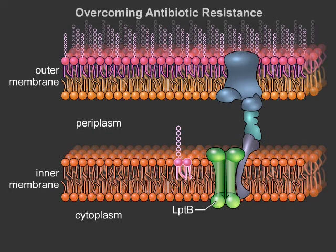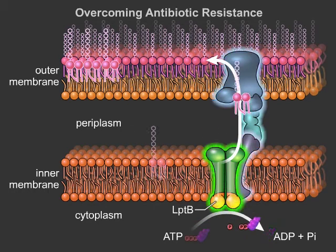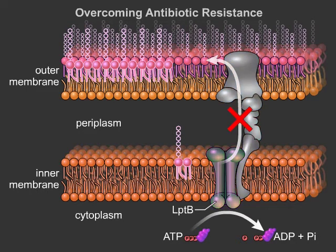One way to overcome this problem is to inhibit the assembly of the outer membrane that protects these bacteria. LPTB is part of the protein complex that bridges the inner and outer membranes to transport membrane components from where they are made in the inner membrane to the outer membrane. LPTB is an ATPase that powers this process by converting the high-energy molecule ATP into ADP.